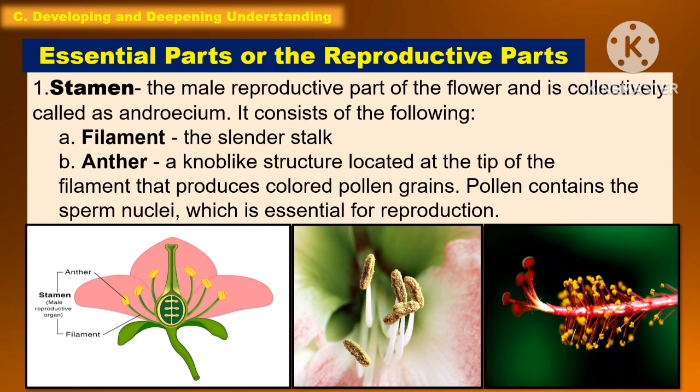The following are the essential or reproductive parts of the flower. The first is the stamen, which is the male reproductive part of the flower, collectively called the androecium. It consists of the filament, which is the slender stalk, and the anther, which is a knob-like structure at the tip of the filament that produces colored pollen grains. Pollen contains the sperm nuclei, which is essential for reproduction.